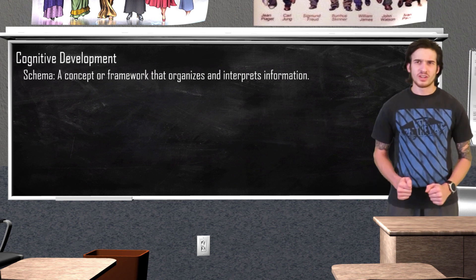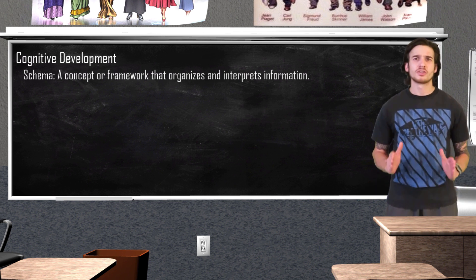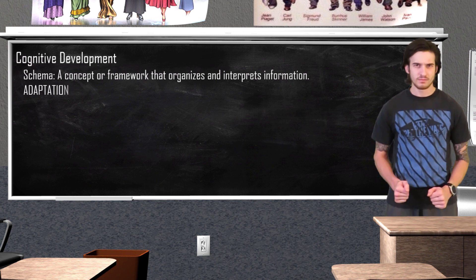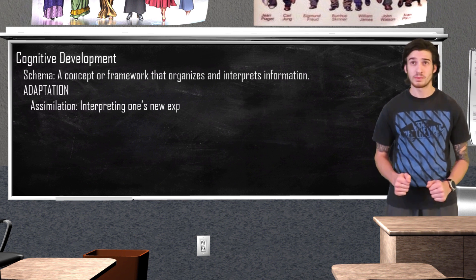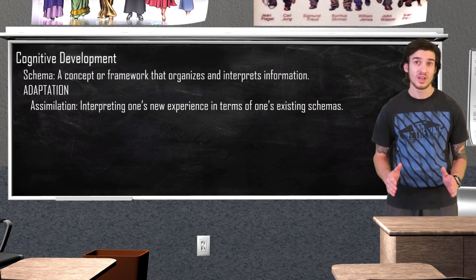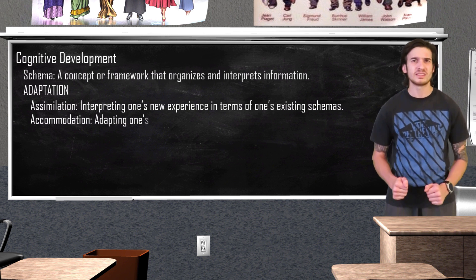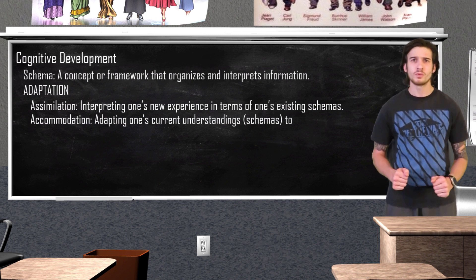To explain how we use and adjust our schemas, Piaget theorized two concepts of adaptation. Assimilation is when we interpret new experiences in terms of our existing schemas, while accommodation is when we adapt our current understanding to incorporate new information.